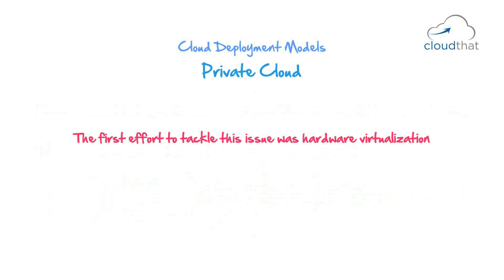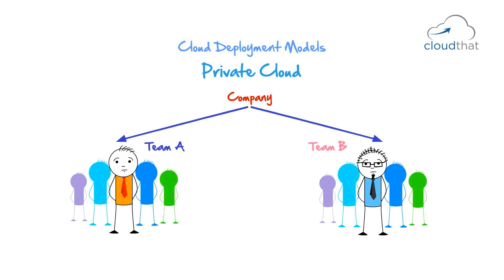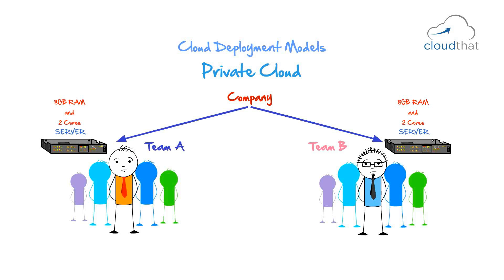The first effort to tackle this issue was hardware virtualization. Let's say that a company has two teams — Team A and Team B. They both require one machine each, and each server has a capacity of 8 GB RAM and 2 cores. Let's say Team A's system is really popular and is using up all the memory and CPU available and is in need for more. Meanwhile, Team B is not really using much of its CPU or memory.